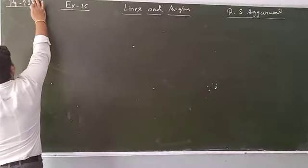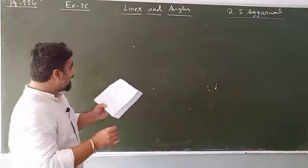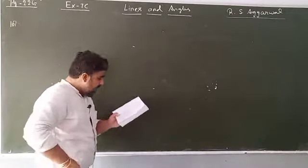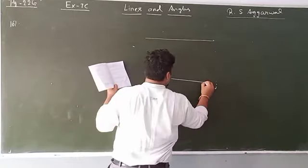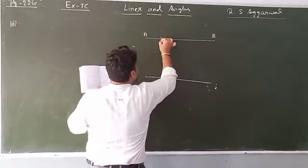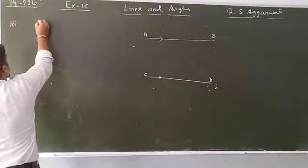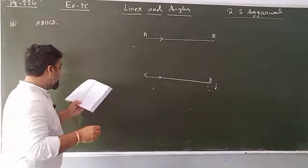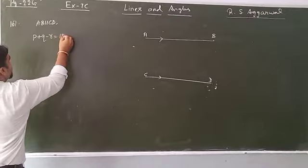Question number 16 says: in the given figure, AB is parallel to CD. We have to prove that p plus q minus r is equal to 180 degrees.